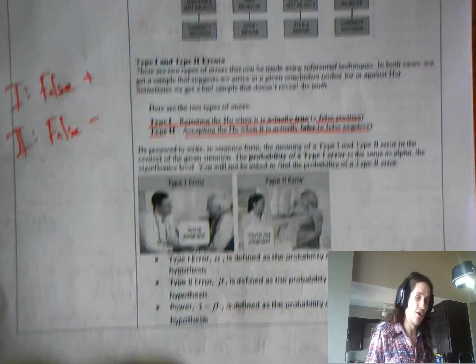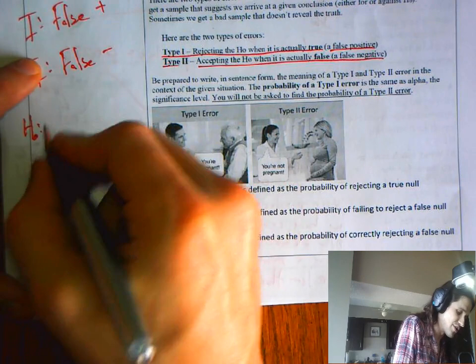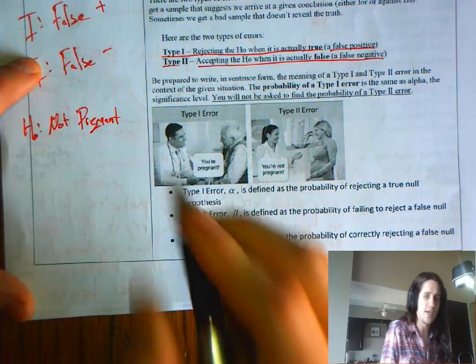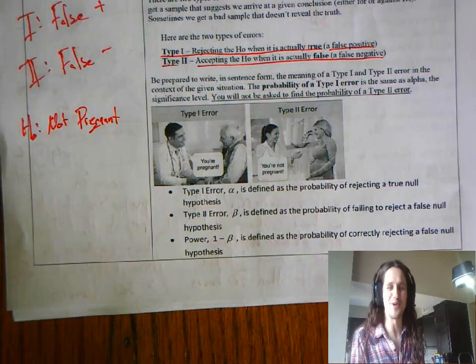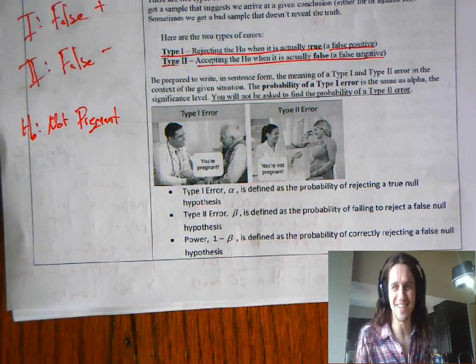So type 1 could be thought of as a false positive. Type 2 error could be thought of as a false negative. Five ways to think about it. Down here. Let's remember what we assume out in the world. Our assumption out in the world is that you are not pregnant. We do not walk up to people and say, hey, you're pregnant. Once this quarantine's over, go to the grocery store and say, hey, are you pregnant?